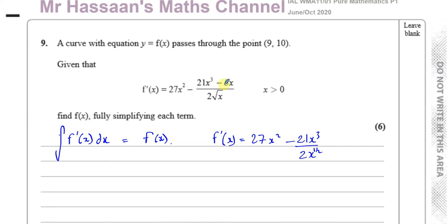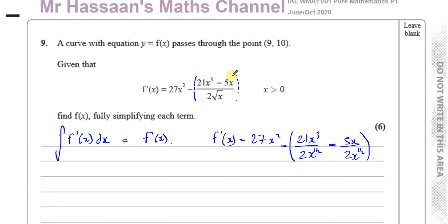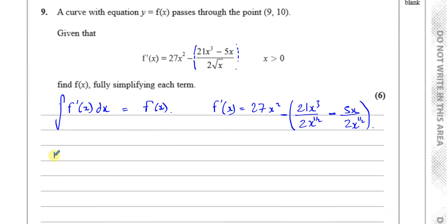Be very careful when you have a minus sign in front of this fraction — remember, the fraction bar acts like a bracket. So I'll put minus 5x over 2 times x to the power of a half in brackets. The minus sign applies to the whole of this expression. This is a place where many students made mistakes; when I set this paper for my class, quite a few students lost marks because the minus sign changes the second term to a plus when you split it up.